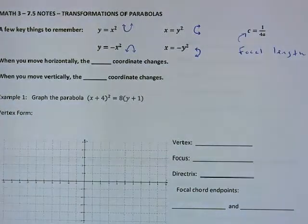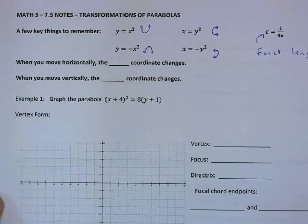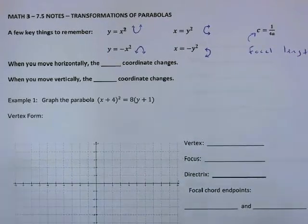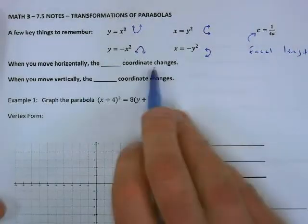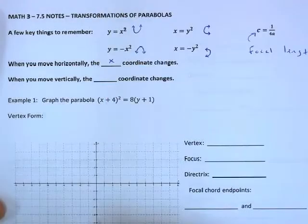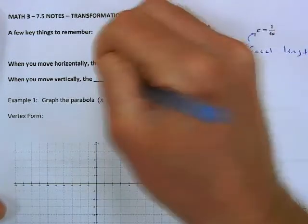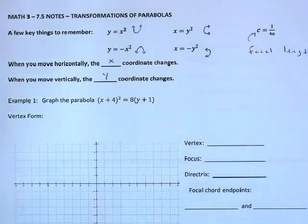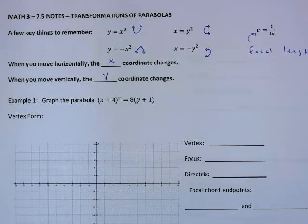Something you should already know, but just a quick reminder: when you move horizontally, left and right, the x coordinate changes. When you move vertically, up or down, the y coordinate changes. We're going to see stuff moving around, so we want to make sure we know which variable — x or y — is changing.